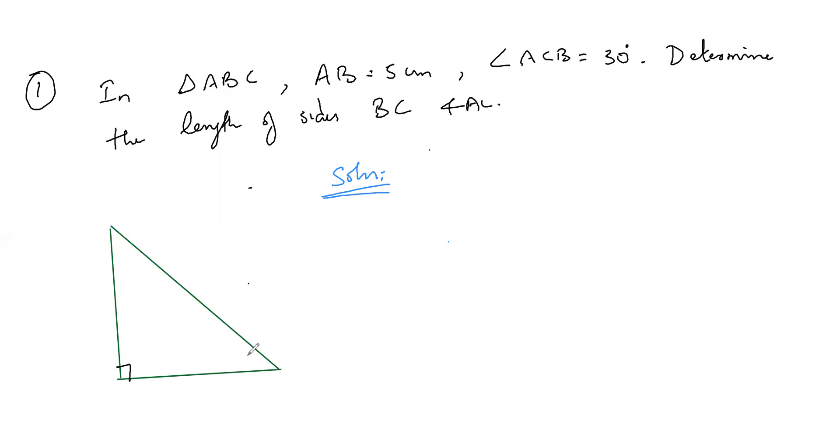Then you mark 30 degree angle ACB. You can put it ABC wherever you want. But ACB should be 30 degree. So if this is 30, they are telling determine the length of side BC and AC.